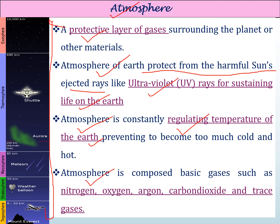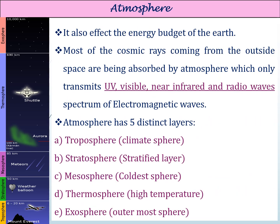The atmosphere is composed of gases like nitrogen, oxygen, argon, carbon dioxide, and some trace gases. The atmosphere also affects the energy budget of the earth. The energy coming from the solar system is affected by the atmosphere and its components. The energy budget refers to the amount of energy we gain and the amount we release — that is the energy budget of the earth.